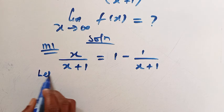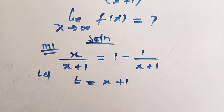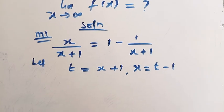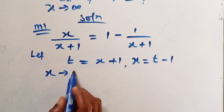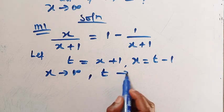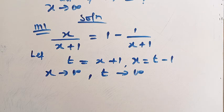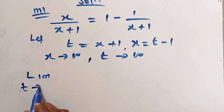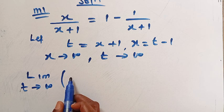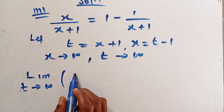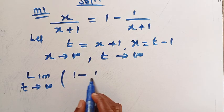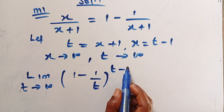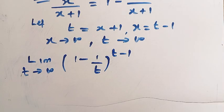If I let t equal x plus 1, then x equals t minus 1. If x approaches infinity, since they have the same relationship, then t will also approach infinity. So the limit changes: we now have the limit as t approaches infinity of 1 minus 1 divided by t, raised to the power of t minus 1. Consider this as the first step.